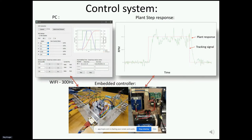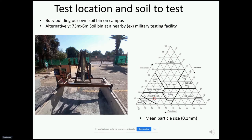To control the bevameter, I developed a simple control system: a Python GUI running on a control PC, communicating with an embedded controller over Wi-Fi at 300 Hz to control the three axes. It implements a simple PID controller that can be live-tuned from the GUI. The measurements are quite noisy, making closed-loop control difficult. For the test location and soil bin, I plan on using a well-graded soil of mean particle size 0.1 mm, adding approximately 5% water content and compacting it, to hopefully observe dilation and make the shear rate effect more prominent.